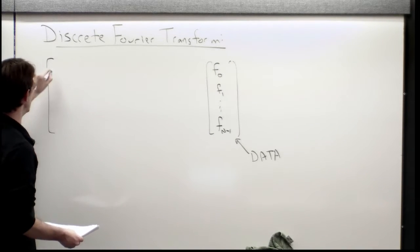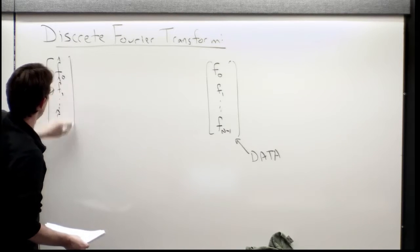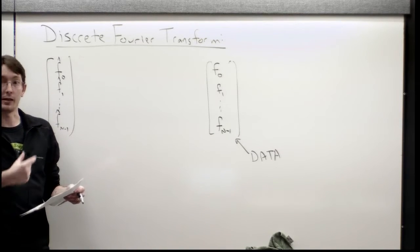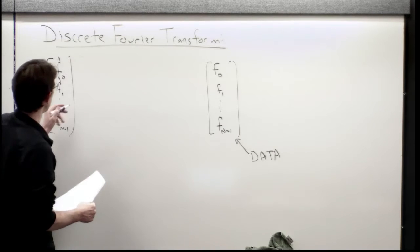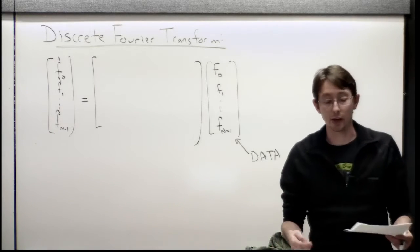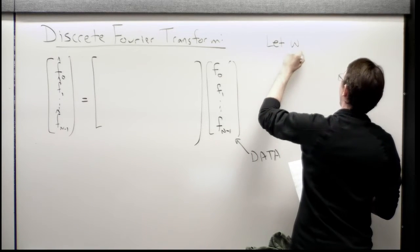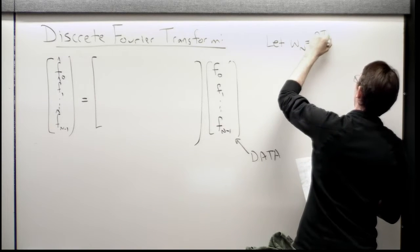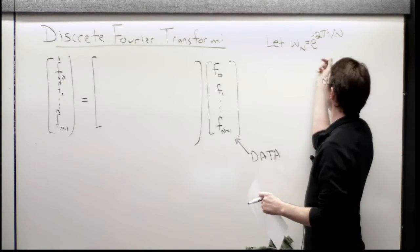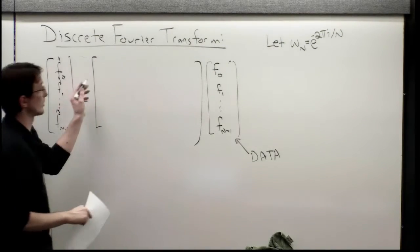What I would like to do is break this data down into a sum of sine waves of different frequencies. And I want to know what is the amplitude of each of those sine waves, how much energy is in each frequency. So the output that I want are these F hats - F0 hat, F1 hat, Fn minus one hat.